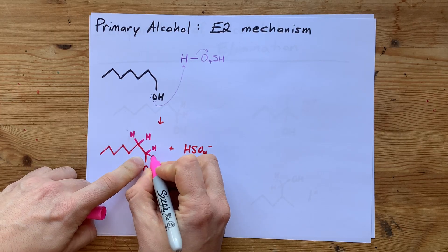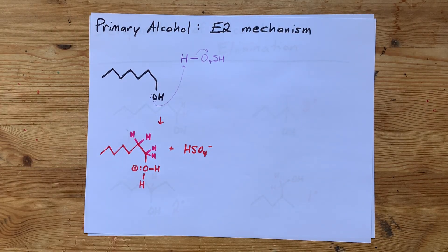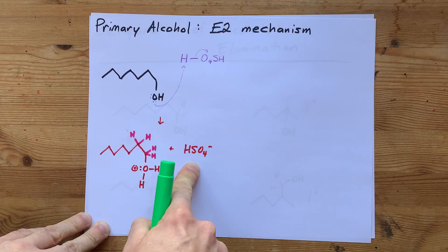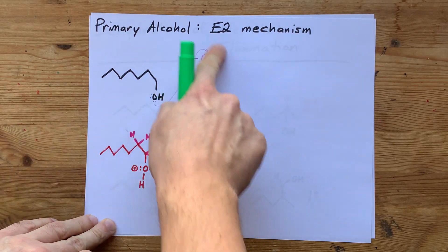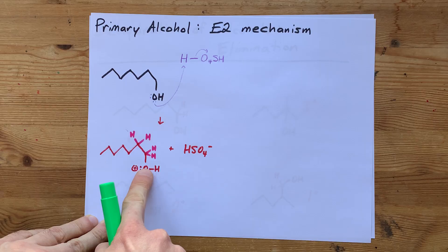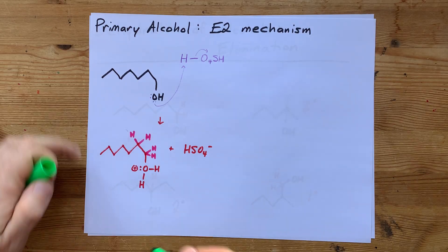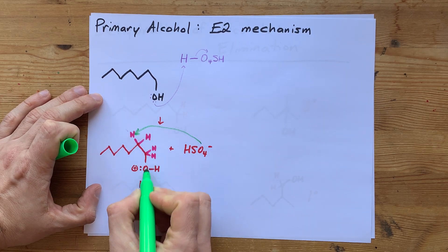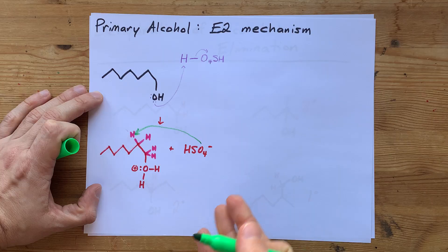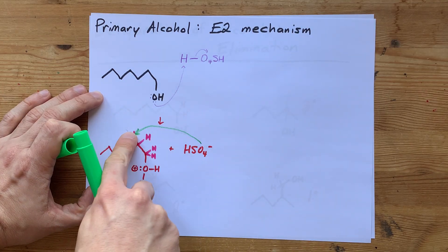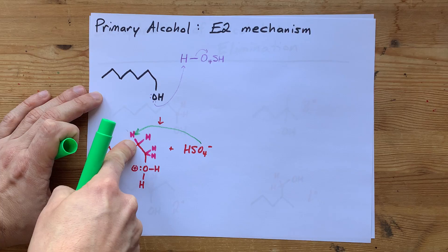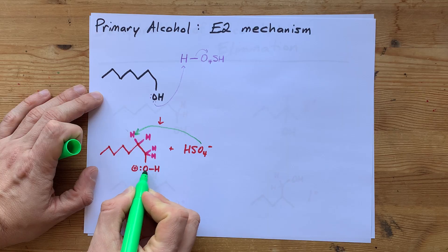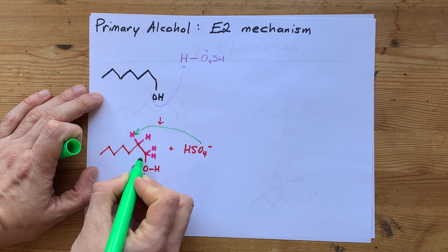Now, technically, this one does as well, but I didn't need to show those. Because what's going to happen here is the conjugate base of the acid, which again, the acid gave away its H to make the OH into OH2, is going to steal one of the hydrogens on the carbon next to the carbon that has the OH on it. It's stealing the H, and those electrons need to go somewhere.